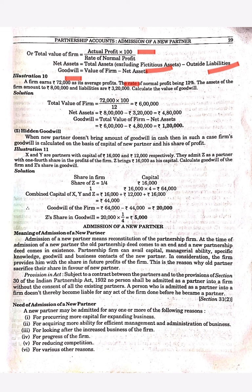Now let's look at Illustration Number 10. A firm earns ₹72,000 as its average profit. The rate of normal return is 12%. The assets of the firm are ₹8 lakh and liabilities are ₹3,20,000. We have to find out the goodwill. It's very simple — first of all, we find the total value of the firm.